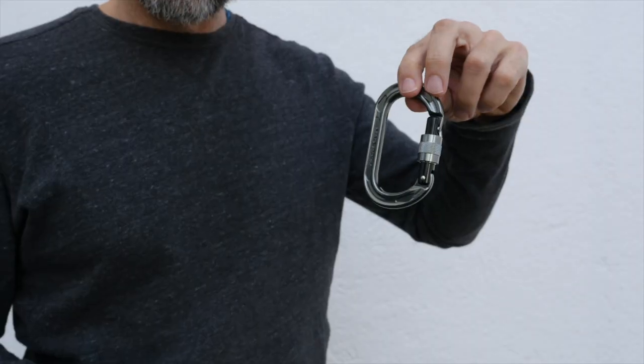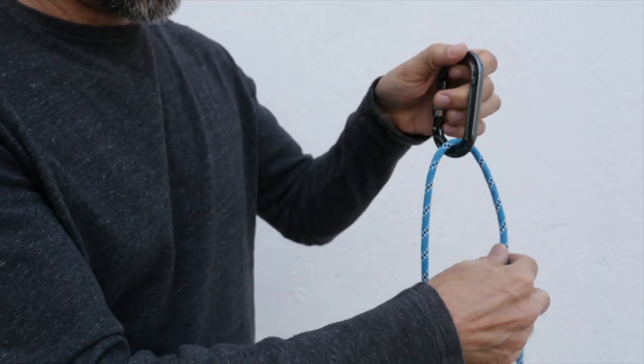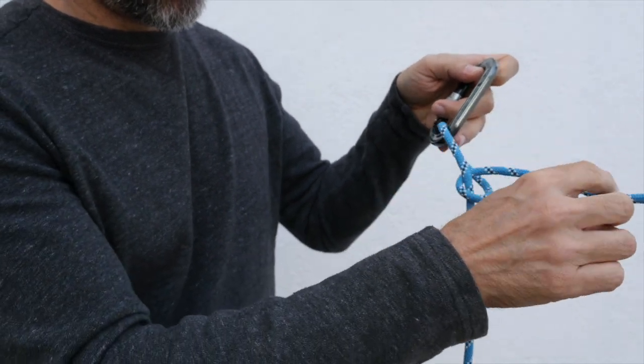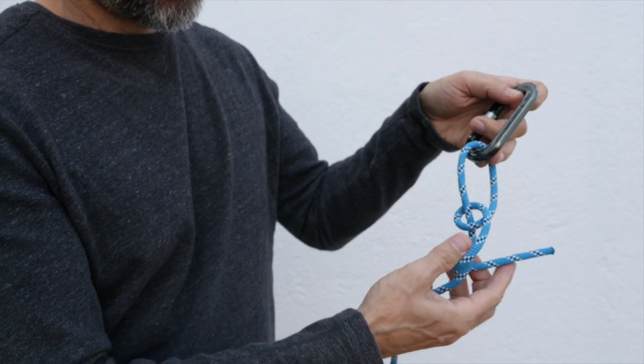I'm going to pull out the carabiner again and this time tie it differently. I'm going to pass the rope around the anchor and make a half hitch knot, and then I'll add another half hitch below the first.